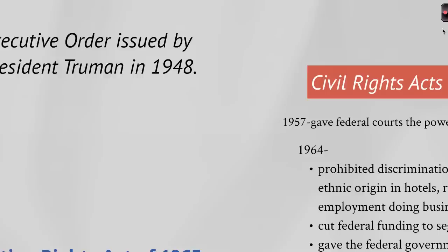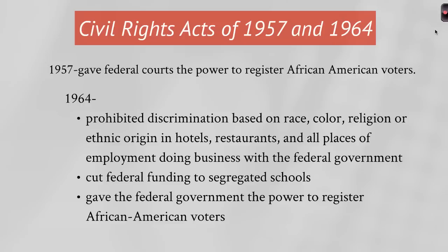There were two major civil rights acts passed. The Civil Rights Act of 1957 gave federal courts more power to register African American voters, but it was limited. The Civil Rights Act of 1964 was far more significant: it desegregated public places, cut federal funding for segregated schools — helping address the 'deliberate speed' loophole — and gave the federal government power to register African American voters.